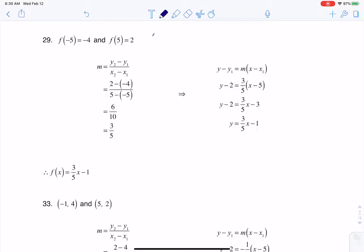So if I look at it, I have two ordered pairs. I have negative 5, negative 4, and then I have 5, 2.